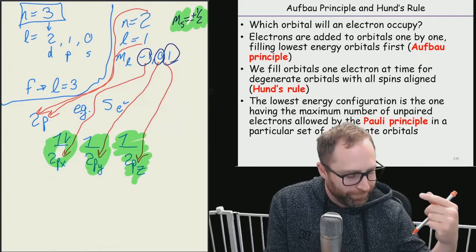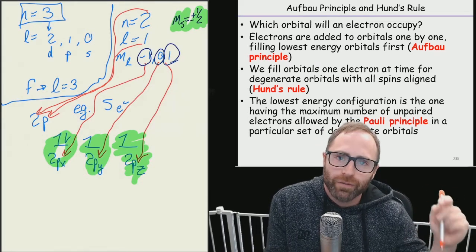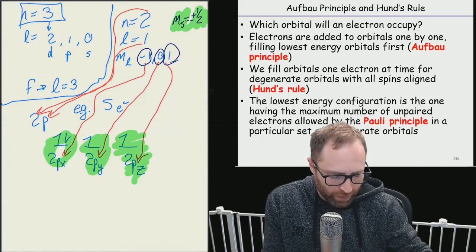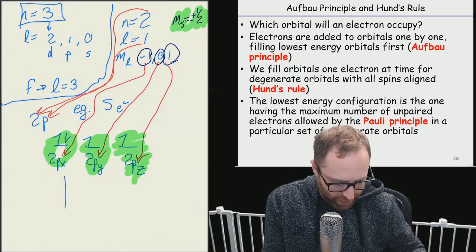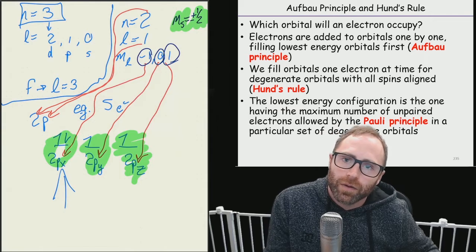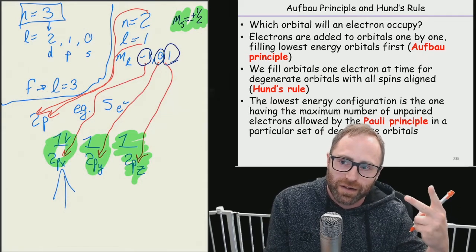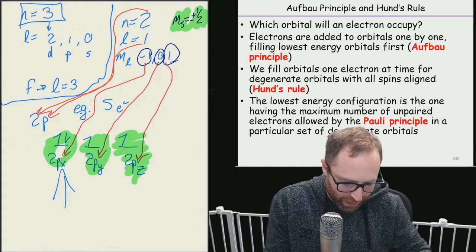And then at that point in time all of the quantum numbers for this thing right here are taken because there are only two possible sets that could fit in there. So now we have to go to the next orbital over.